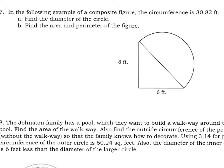The third problem now says, in the following example of a composite figure, which just means two figures put together, our circumference is 30.82. From this, we need to find diameter, area, and perimeter. We know the circumference is around the outside of the whole circle. But notice we only have half a circle. So if I want to label this, I need to take half of my circumference, which half of 30.82 is 15.41.